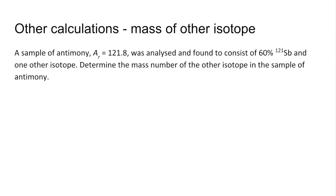Another type of calculation is calculate the mass of the other isotope. So this time we've been given the relative atomic mass, and we're told it's got 60% of antimony-121, and one other isotope to determine the mass number of the isotope in the sample.